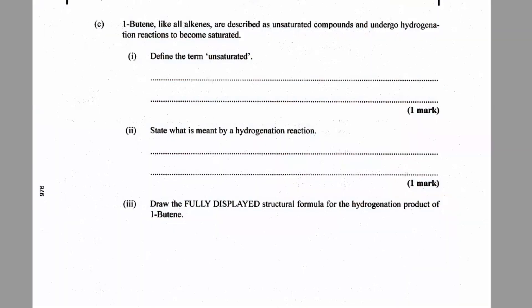Part C. One-butene, like all alkenes, is described as an unsaturated compound and undergoes hydrogenation reactions to become saturated. Define the term unsaturated. Unsaturated means that there is a carbon-carbon double bond — the compound doesn't have carbons that are only taking part in carbon-to-carbon single bonds.